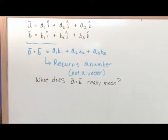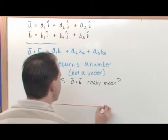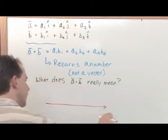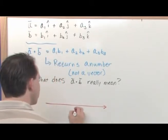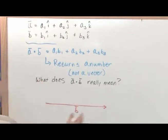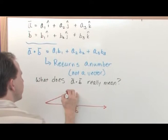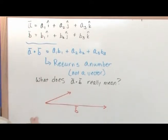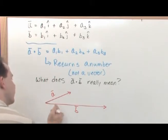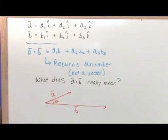A picture's worth a thousand words, so let's say you have some vector with a length — we'll call that vector b. And let's say a is some vector that points up in a different direction with a different length. These vectors, because they're not pointing in the same direction, have an angle between them — we call it theta.